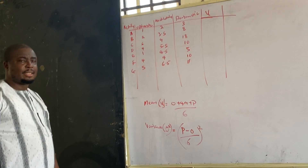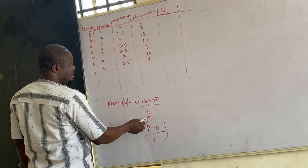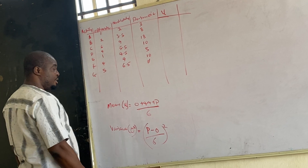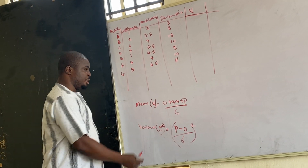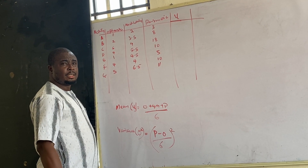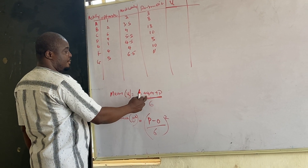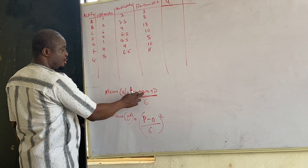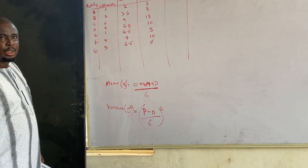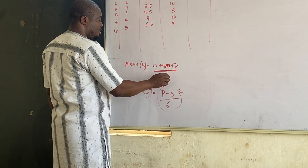In determining the mean, the formula is: optimistic plus four times most likely plus pessimistic, all divided by 6. The key thing to remember is that you multiply the most likely value by 4. The weights are 1, 4, and 1, which sum to 6 — that is why you divide by 6 to get the mean.